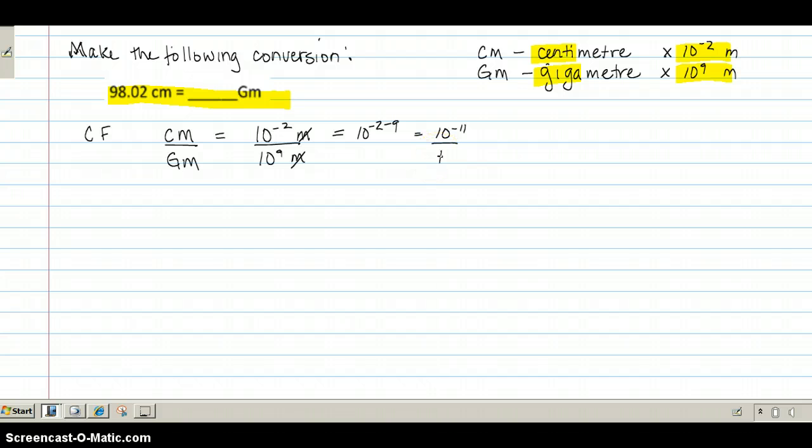Now first, you can check it for sense. Think about a cm, quite small, and a gigameter, huge. So with your conversion factor, if you're looking at 1 cm, that's the same as 10 to the minus 11 gigameters. So that does make sense.